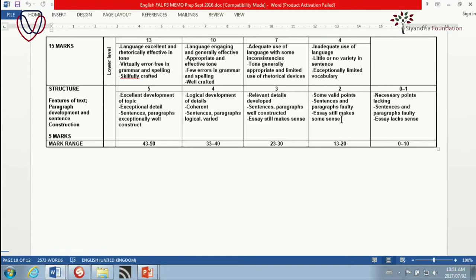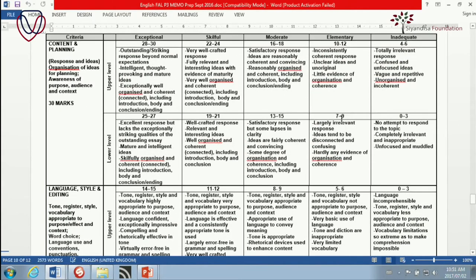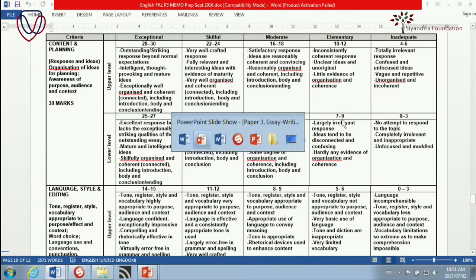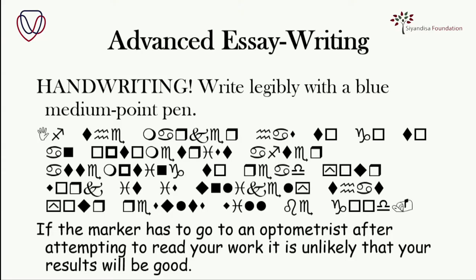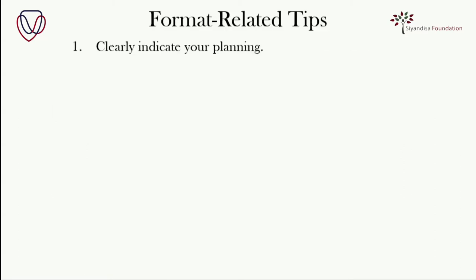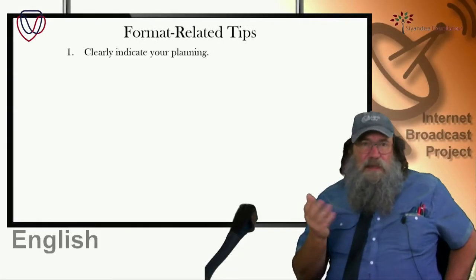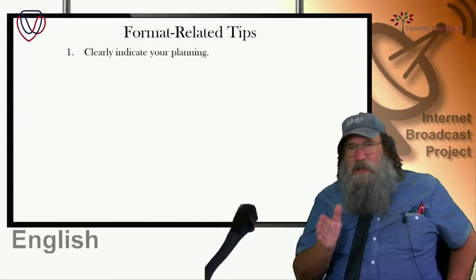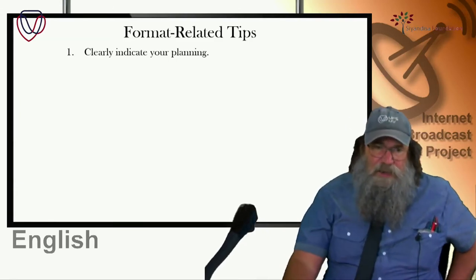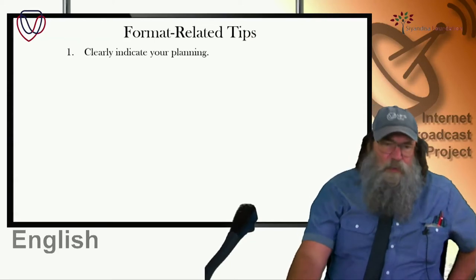Now let's move on. We're going to leave this rubric and look at advanced essay writing. What I've done in this presentation is take note of many of the errors picked up by the internal moderator who writes out a report. These are the main ones. We've got three categories: format, content, and language and spelling. Let's start then with the format-related tips.